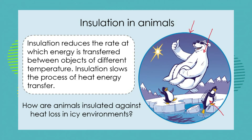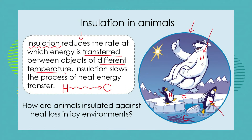Let's go back to our theory and look again at heat energy transfers and insulation. We know that insulation reduces or slows down the rate at which energy is transferred between objects of different temperature. We have a hot object with a high temperature and a cold object with a low temperature, and heat energy is transferred from the hot to the cold object. The polar bear is the hot object and the water is the cold object; the penguin is the hot object and the ice is the cold object. We have to use insulation to slow down or stop that transfer of heat energy.